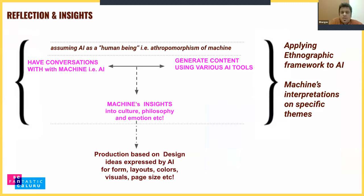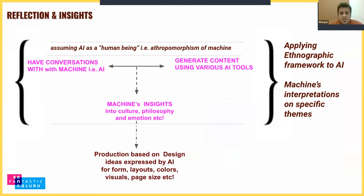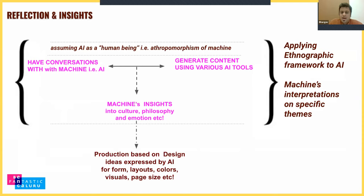As we tinkered with the tools and reflected on our process, we articulated that we were building on the idea of imagining the machine as a being — as a human being — expressing its ideas. Our project became applying an ethnographic framework to AI: just as we read humans, we try to read the ideas of machines by what they produce.